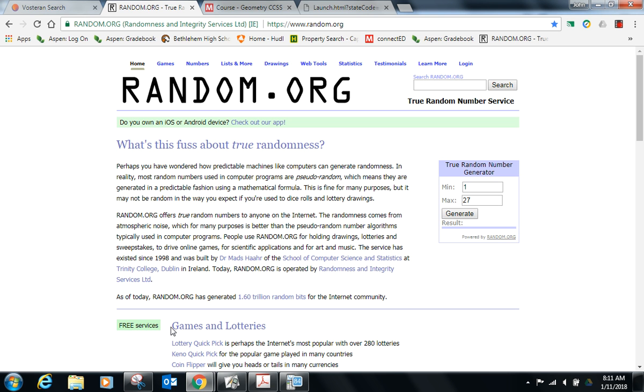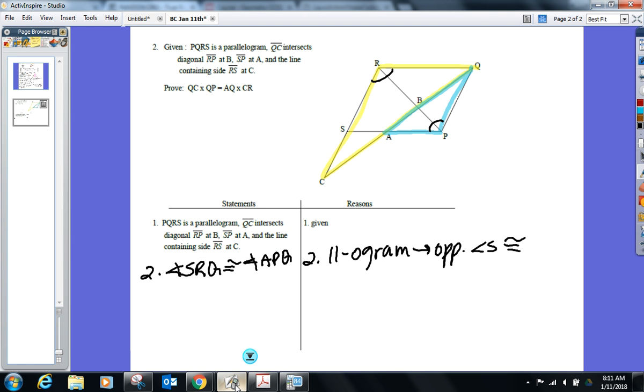One more pair of angles. Angle QAP and RQB. I can't say they're congruent right now. You've got to tell me the lines are parallel first. In particular, which lines? RQ parallel to SP. Why are those parallel? Because opposite sides of a parallelogram are parallel. Now you can say those angles Frank gave us were congruent. Angle RQB and QAP, parallel lines imply alternate interior angles.